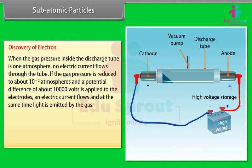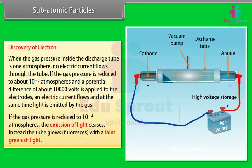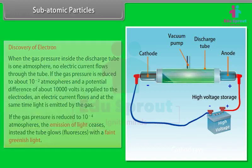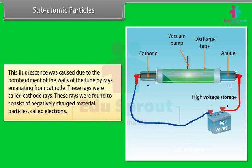When a potential difference of about 10,000 volts is applied and pressure is reduced to about 10⁻² atmospheres, electric current flows and light is emitted by the gas. If the pressure is further reduced to 10⁻⁴ atmospheres, the emission of light ceases. Instead, the tube glows with a faint greenish fluorescence, caused by bombardment of the tube walls by rays from the cathode — called cathode rays — consisting of negatively charged particles called electrons.